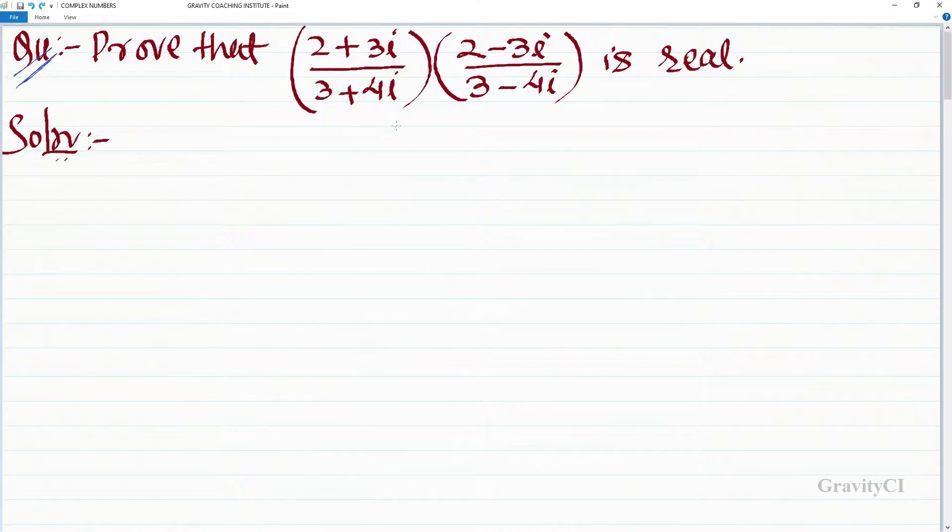Prove that (2 plus 3 iota upon 3 plus 4 iota) multiplied by (2 minus 3 iota upon 3 minus 4 iota) is real.